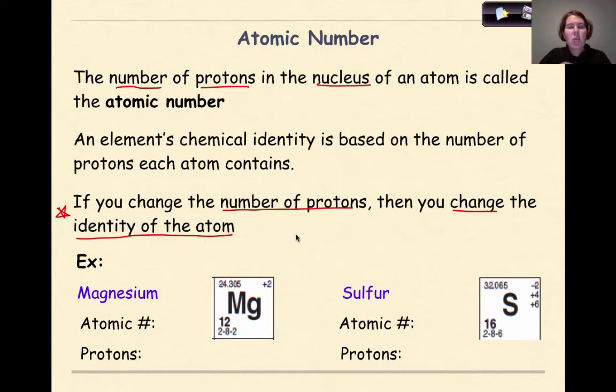So we really cannot mess with the number of protons inside the nucleus of an atom unless we want to change it, which might be the case, especially if we talk about something down the road like nuclear chemistry. Let's look at two examples. Here's an example of magnesium. Here's the symbol for magnesium, an uppercase M and a lowercase g. So the atomic number would be 12, therefore the number of protons will be 12. And we can see it represented right here on your reference table.